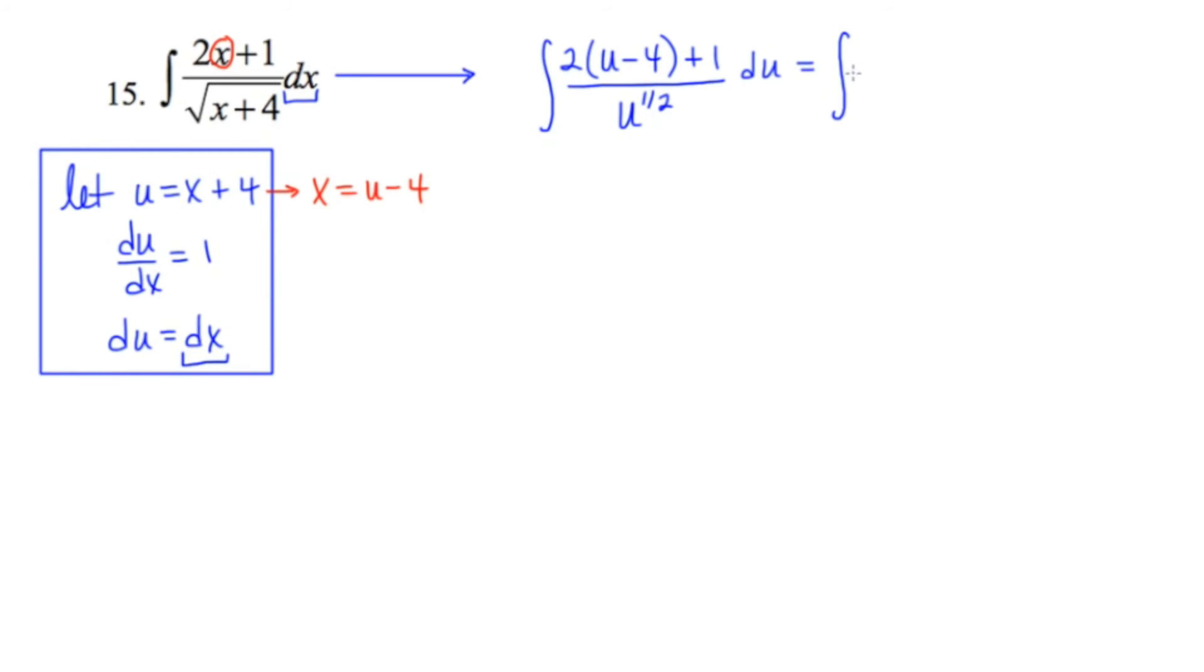I'm going to distribute on top and add 1. So we end up getting as our numerator, 2u minus 8 plus 1, or 2u minus 7.